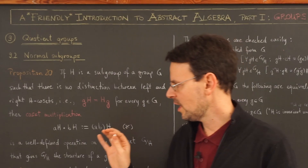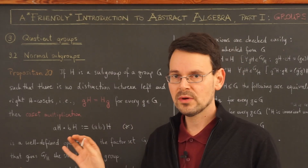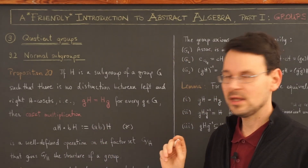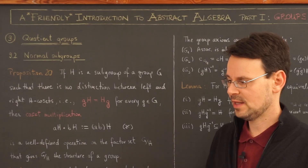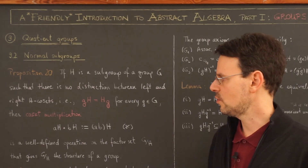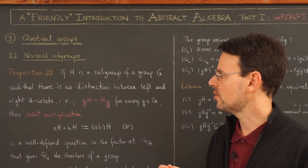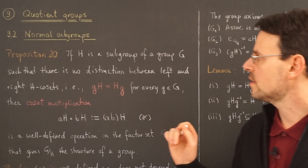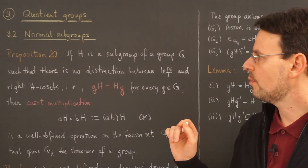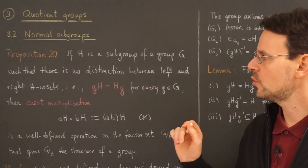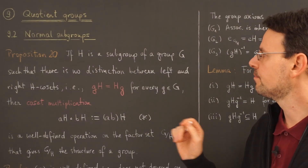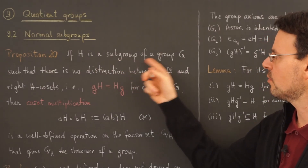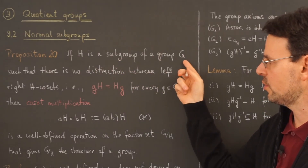Today we are going to learn a condition under which this actually works, and this leads to the notion of a normal subgroup. This is the content of proposition 20. As always, H is a subgroup of a group G.